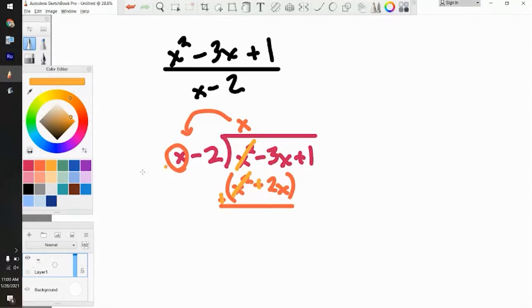From here, we're going to do negative 3X plus 2X. That's going to be negative X, and then the plus 1 just drops down. And now you have to think, what do you multiply X by to get negative X? Well, that would be negative 1.